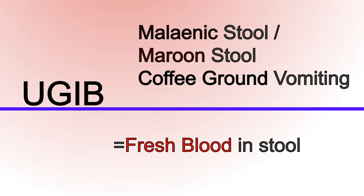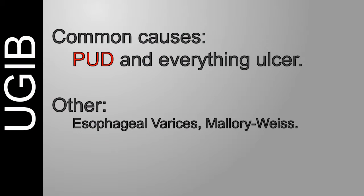Let's start with UGIB. When clerking a case, it's always nice to have in mind the common causes of the disease. For UGIB, it will be gastric ulcer and oesophageal varices. Once you understand the situation — how long the patient has been having blackish stool, or how often the patient is vomiting blood or coffee ground — we start asking the special questions.